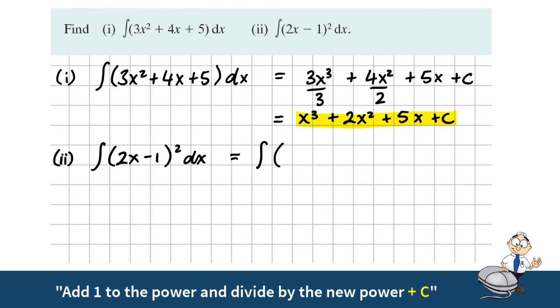So you square the first thing, it becomes 4x squared. Multiply the two of them and double it, and square the second thing.